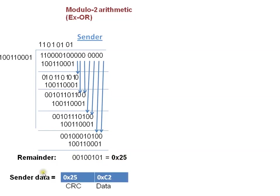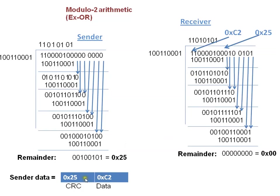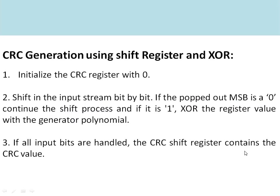The remainder is 0x25 in hexadecimal. This is the CRC value. The sender will transmit data C2 along with CRC 0x25. The receiver will perform the division operation again on the received data. If there are no errors, the remainder will be zero. If any bit changes occur, the remainder will not be zero and the receiver will understand there is an error and can request retransmission or stop the communication.